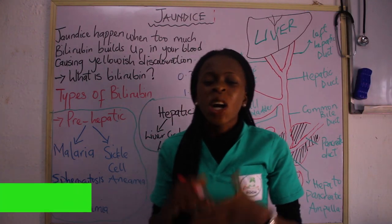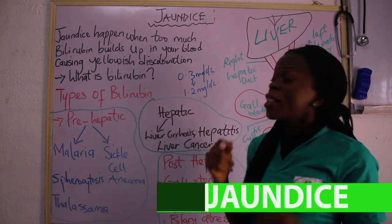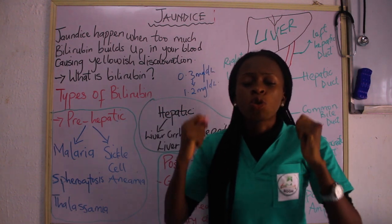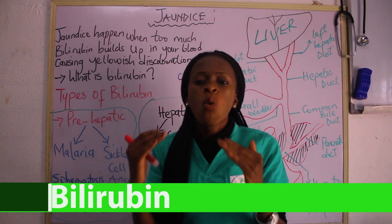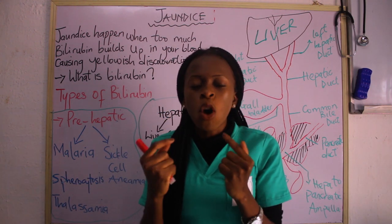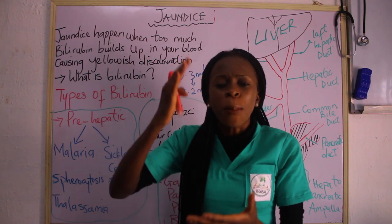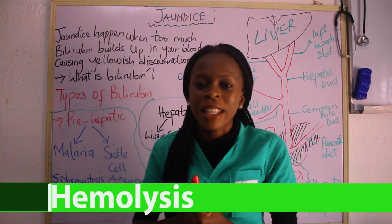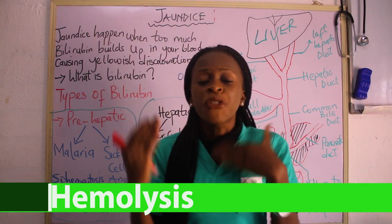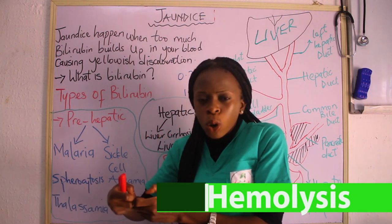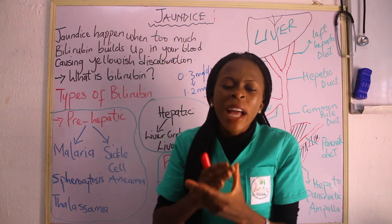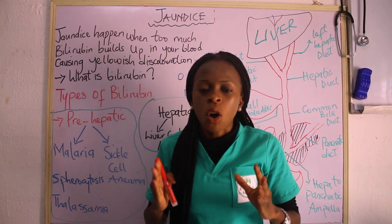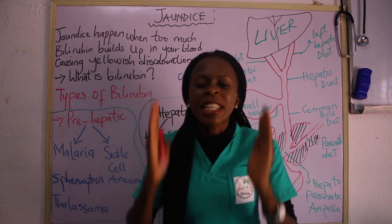Today we are going to be talking about jaundice. Jaundice happens when too much bilirubin builds up in your blood, causing yellowish discoloration. In jaundice, there is too much bilirubin. The big question is, what is bilirubin? Bilirubin is a yellowish pigment that is derived from the breakdown of red blood cells — it is more or less a waste product from the breakdown of red blood cells. So when there is excessive bilirubin in the bloodstream, it results in what is called jaundice, characterized by yellowish discoloration.